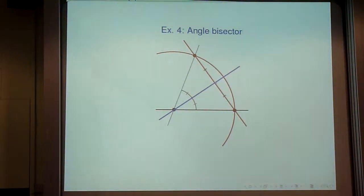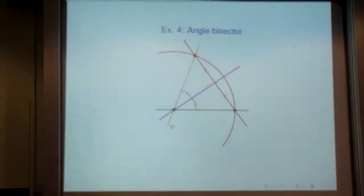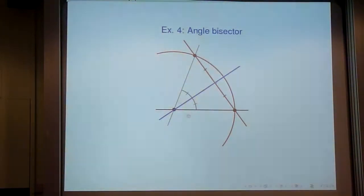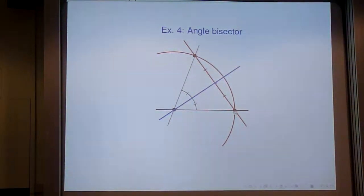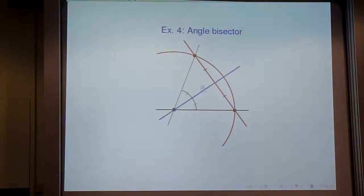Once you can construct the perpendicular bisector of a line segment, you can use that to construct the angle bisector of an angle. An angle is just when two non-parallel lines cross each other. Take the intersection point of your two lines, draw a circle centered there, which intersects both lines at equal distances. Then construct the line segment between those two intersection points and form the perpendicular bisector — that's also the angle bisector.